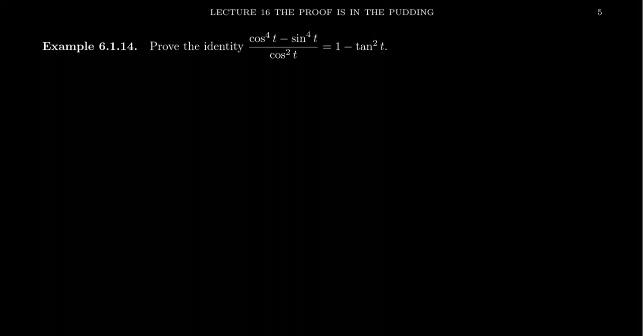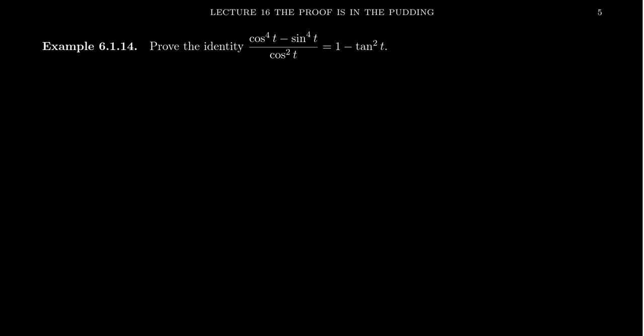In this video, I want to prove some trigonometric identities that involve, so to speak, some quadratic relationships like sine squared, cosine squared. In this case, you see cosine to the fourth times minus sine to the fourth as well. How do you prove something like this?